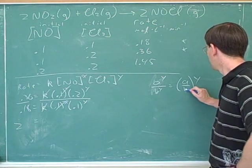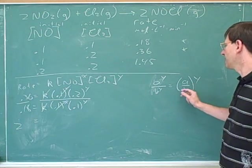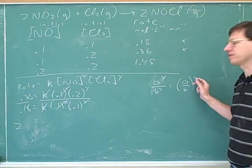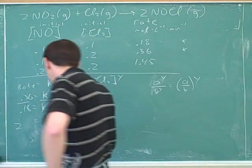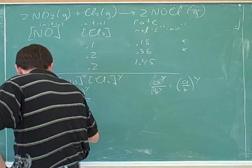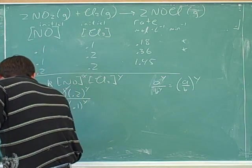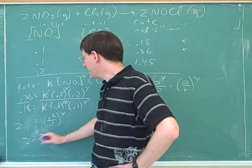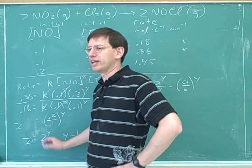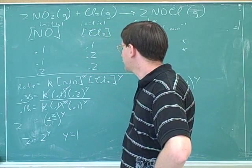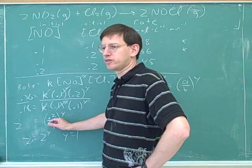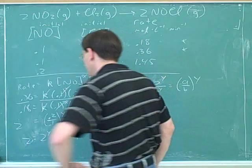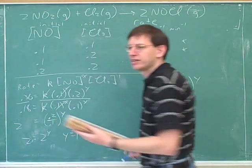That was why it was such a good idea to pick a pair of trials where one of the concentrations was constant. So it's 0.2y over 0.1y. Here's a rule from algebra. A to the y over b to the y is a over b to the y. If two numbers are both to the same exponent, you can factor the exponent out. So I have 2 to the y, so y is 1. And now you can just use trial and error. What exponent would make this equation true? Well, the exponent 1 would make this equation true.